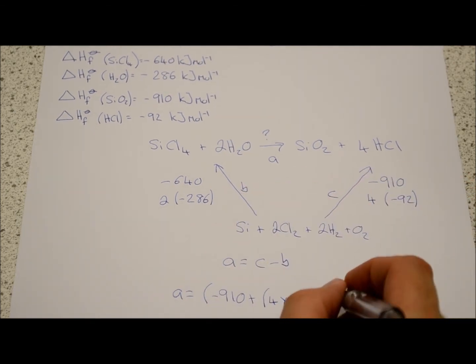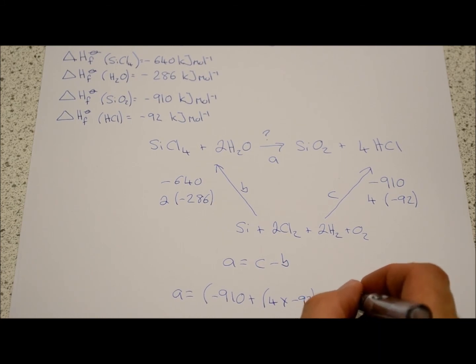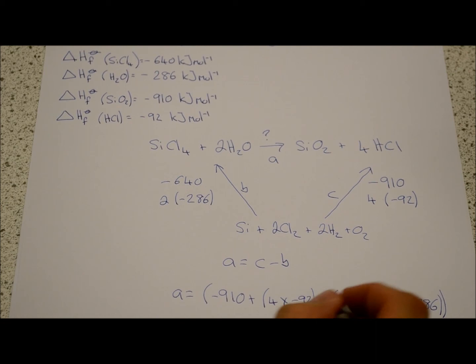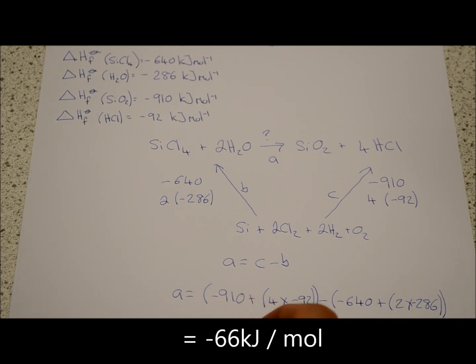Minus, now we're going to make that B, minus six forty added to two lots of two eighty-six negative, nearly made the mistake myself there. Make it look proper. And then if we calculate that, we should get A equals minus sixty-six kilojoules per mole.